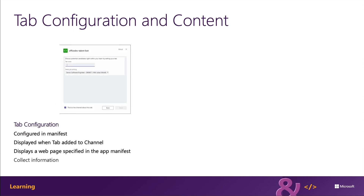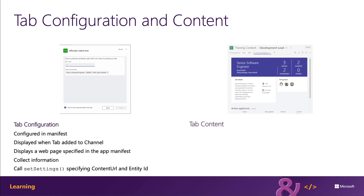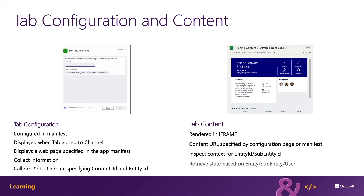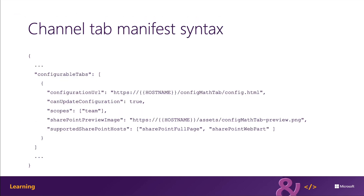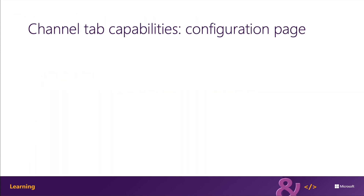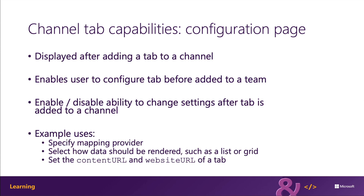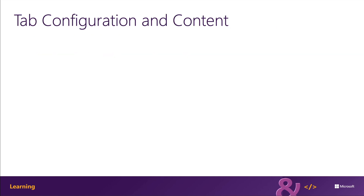The content displayed within a personal tab is specific to an individual user and is not intended to be shared with others on a team. Channel tabs support all members of a team or a channel. A channel tab has one characteristic that differs from a personal tab: channel tabs display a configuration experience to the user when the tab is added to a channel.